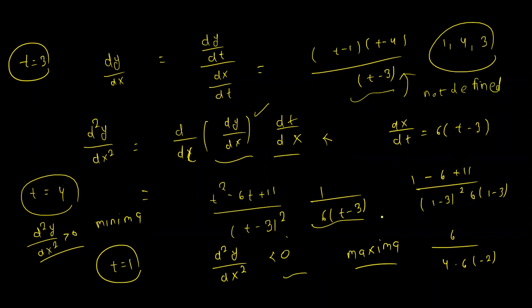At t = 3, dy/dx is not defined, so d²y/dx² is also not defined. Checking the sign of dy/dx in the vicinity of t = 3: the sign changes from one side to the other, so t = 3 is neither a maximum nor a minimum.